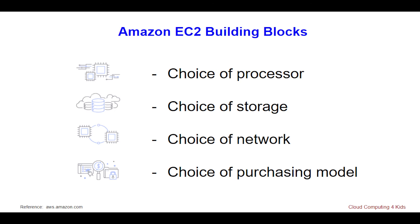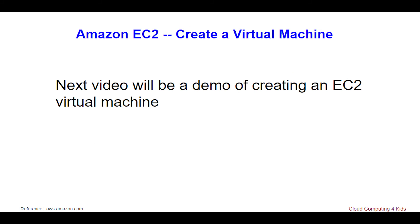A few building blocks are the choice of processor, choice of storage, choice of network, and choice of purchasing model. We will go over these in greater depth in the next video, which will also be a demonstration of creating an EC2 virtual machine or instance.